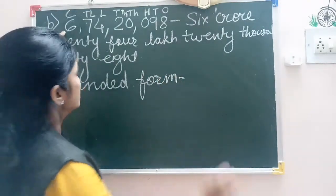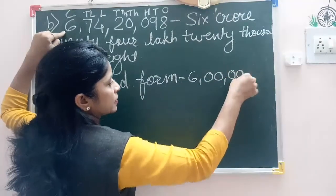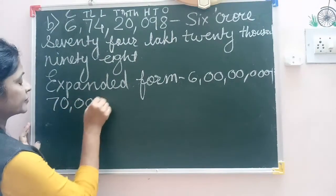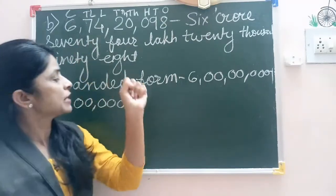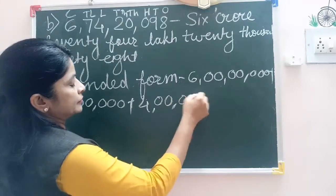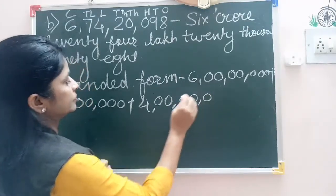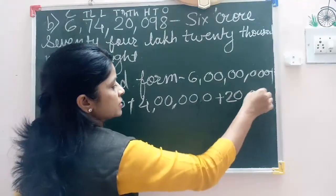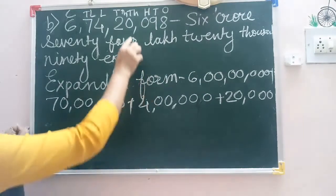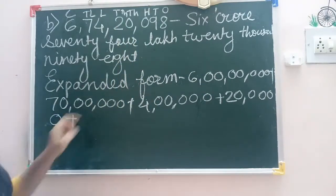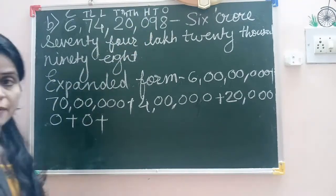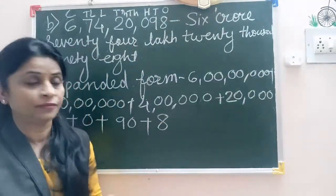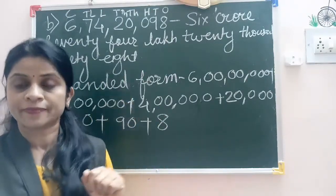6 multiplied by 1 crore, that is 6 crore. Plus 7 multiplied by 10 lakh is 70 lakh. Plus 4 multiplied by 1 lakh is 4 lakh. Plus 2 multiplied by 10,000 is 20,000. 0 multiplied by 1,000 is 0. 0 multiplied by 100 is 0. 9 multiplied by 10 is 90. And 8 multiplied by 1 is 8. This is the expanded form for the given number.